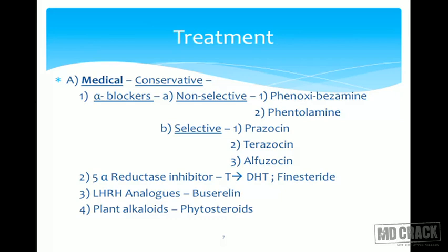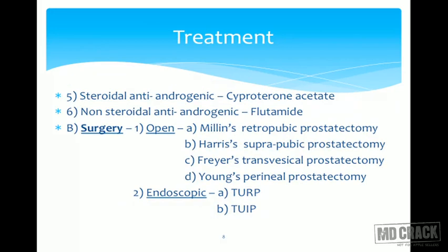We want alpha-1 blockade specifically, achieved through prazosin, terazosin, and alfuzosin. Second, we use a 5-alpha reductase inhibitor, which inhibits the conversion of testosterone into dihydrotestosterone, through finasteride. Third is LHRH analogs with the use of buserelin, and lastly plant alkaloids with the use of phytosterols. Pharmacologically, we can also use steroidal anti-androgens such as cyproterone acetate and non-steroidal anti-androgens such as flutamide.